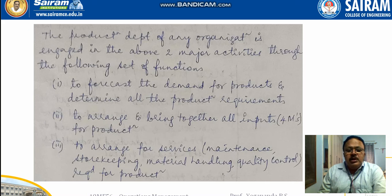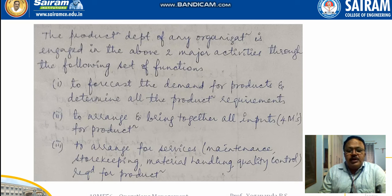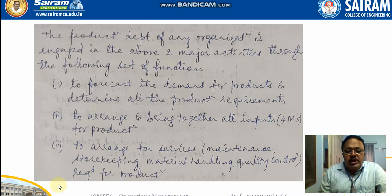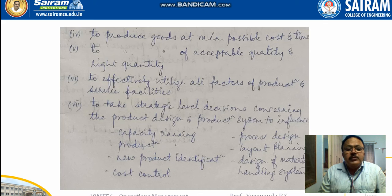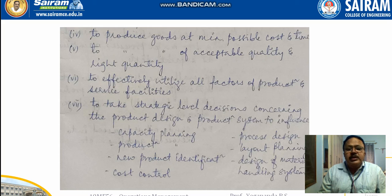The set of functions in operations management includes: forecasting the demand for products and determining all production requirements; arranging and bringing together all inputs, especially the four Ms; arranging for services such as maintenance, storekeeping, material handling, and quality control; and producing goods at minimum possible cost and time while maintaining acceptable quality and right quantity.